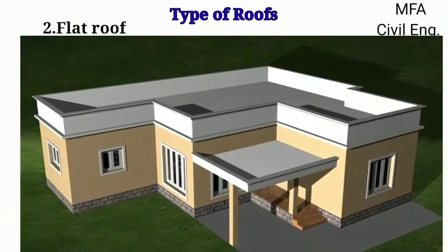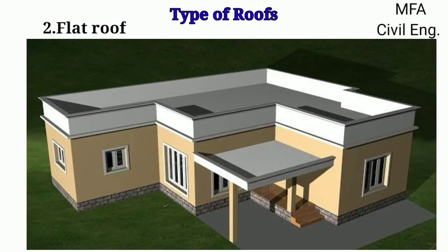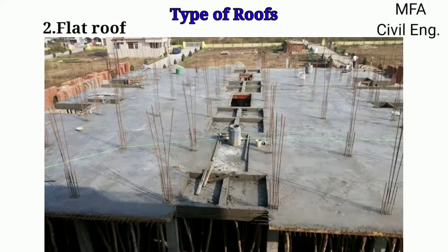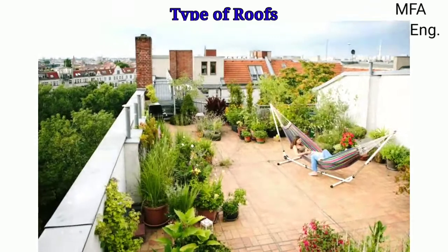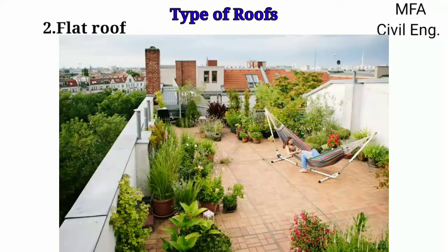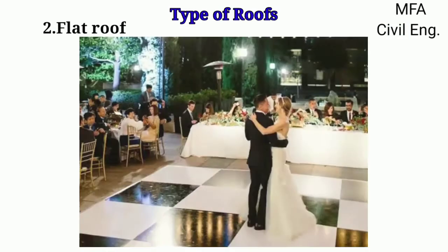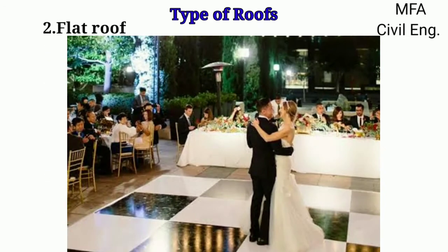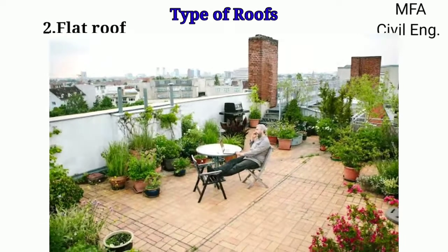Nowadays, reinforced cement concrete roofs are very common. By using a waterproofing agent, the roof can be made leak proof. Flat roofs are easy to construct and maintain compared to sloping roofs. They are multipurpose in the sense that they can be used for various purposes like celebrating functions and roof gardens.